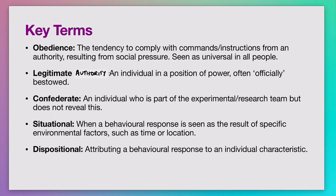Let's look at the key terms important for understanding the remaining lessons. Obedience is our desire and tendency to go along with or comply with whatever instructions or commands we receive from any kind of authority figure. Compliance and conformity are all part of being obedient, and all of that comes from the social pressure we experience. Obedience is part of the social approach in psychology, where we're focused on how the presence of actual, implied, or imagined others impacts the way we behave. Obedience is a very universal human tendency.